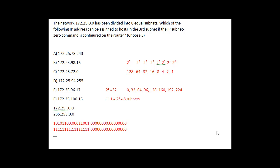Okay, here's another subnetting question that I was asked online to answer. It's a typical question that you might find, a subnetting question that you might find on the Cisco CCNA. I'll show you how you would approach this question. So it says here, the network 172.25 has been divided into eight equal subnets. Which of the following IP addresses can be assigned to hosts in the third subnet if the IP subnet zero command is configured on the router?